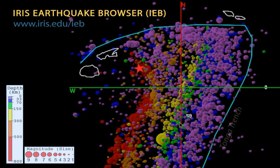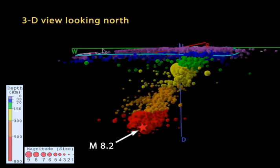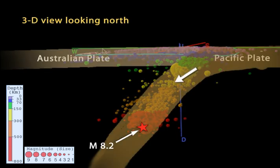we'll use the Iris earthquake browser's 3D tool to look beneath the surface of the earth where we will see that the hypocenter of this earthquake occurred within the subducting Pacific plate.